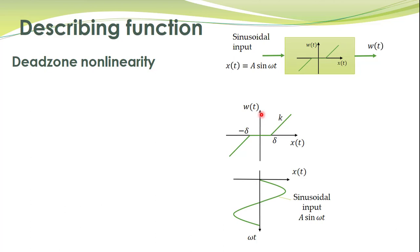The steps to obtain describing functions are quite familiar. We apply a sinusoidal input to this non-linearity and then observe the output. For this particular input, unless the value of the input is smaller than delta there will be no output. After that, if the input exceeds this value, the output will increase proportionally to the input.